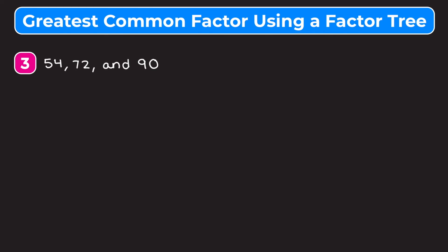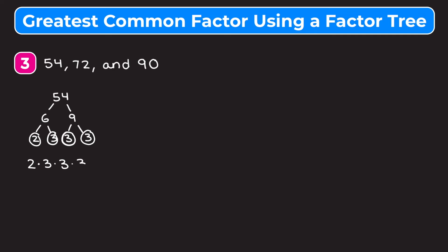Let's start by making a factor tree for 54. I'm going to break it up into six and nine. Neither of those are prime, so I break six into two times three — both prime — and nine into three times three — both prime. So the prime factorization of 54 is two times three times three times three.